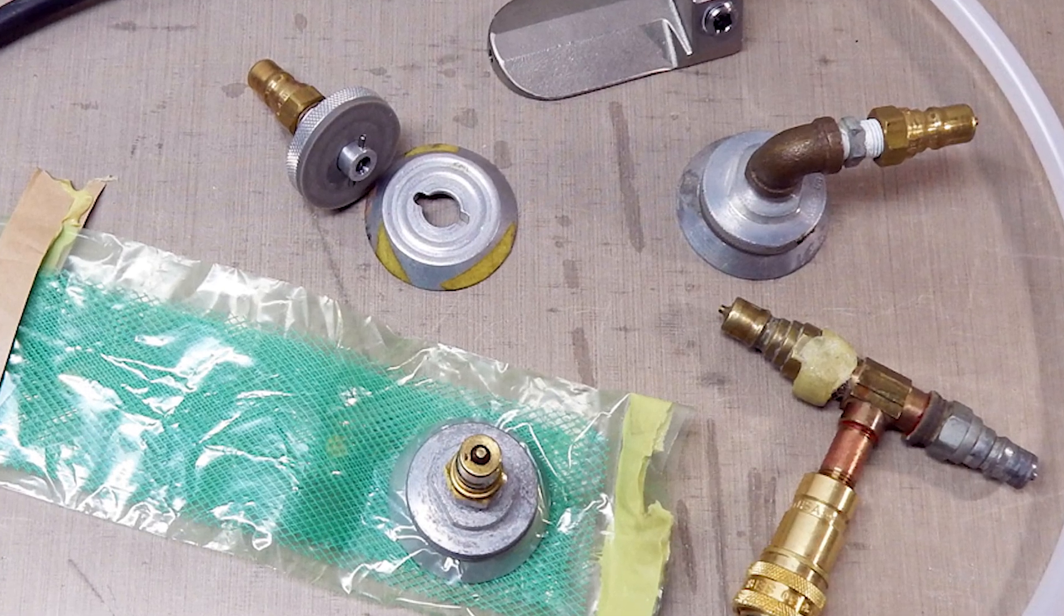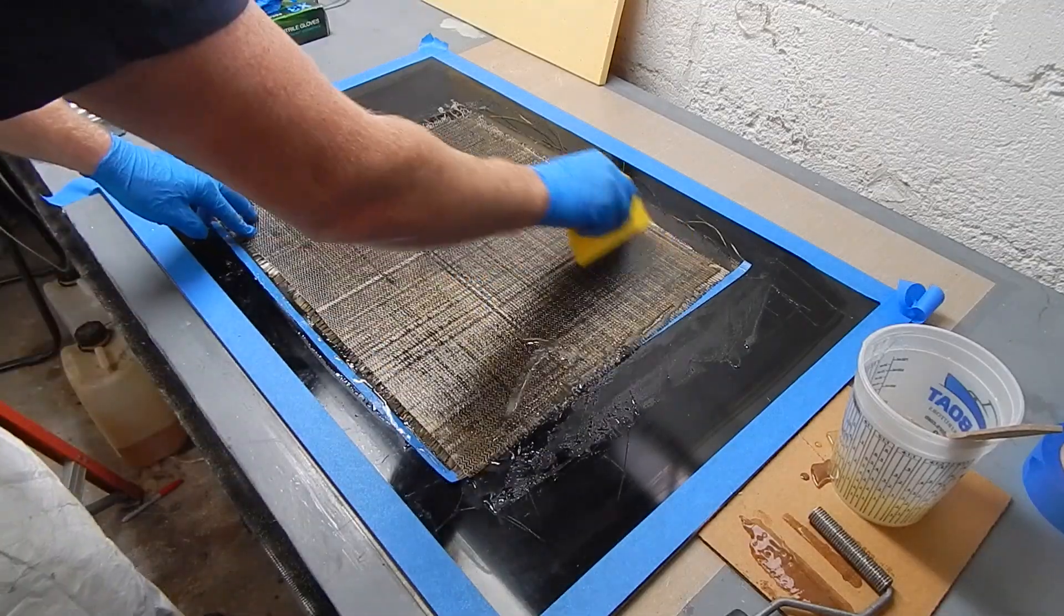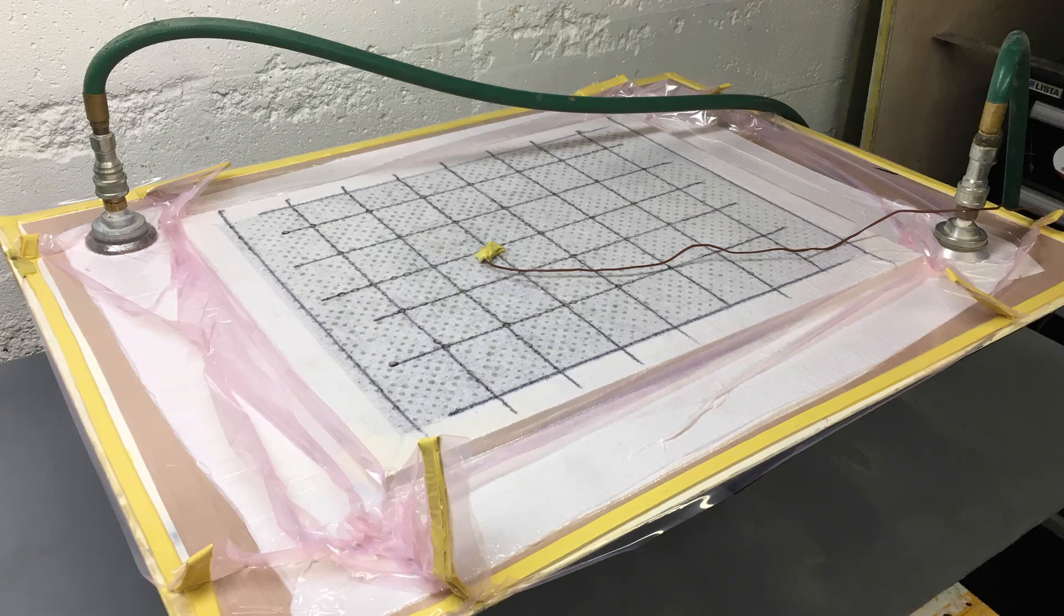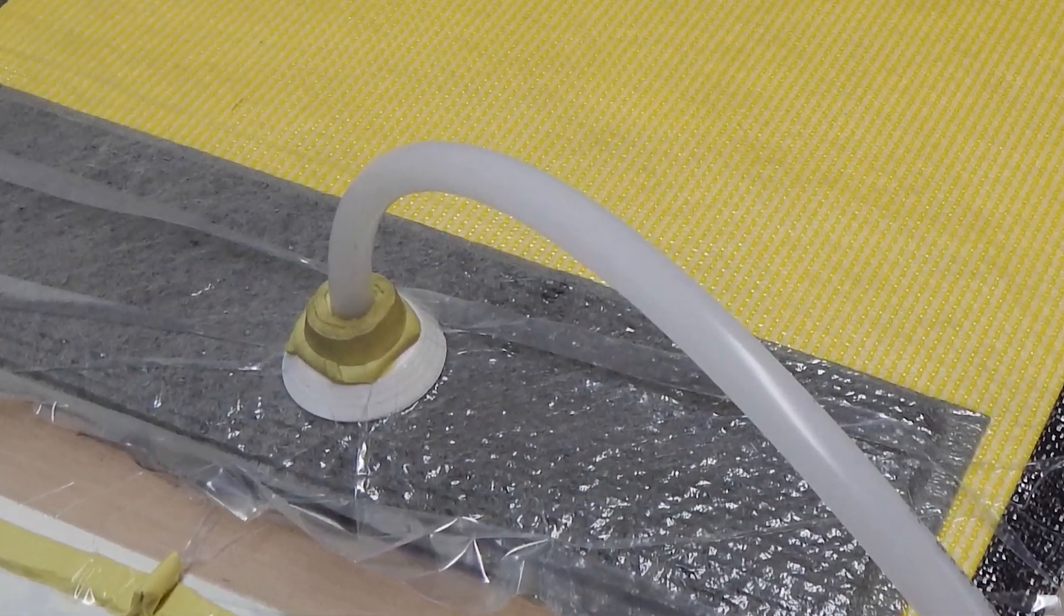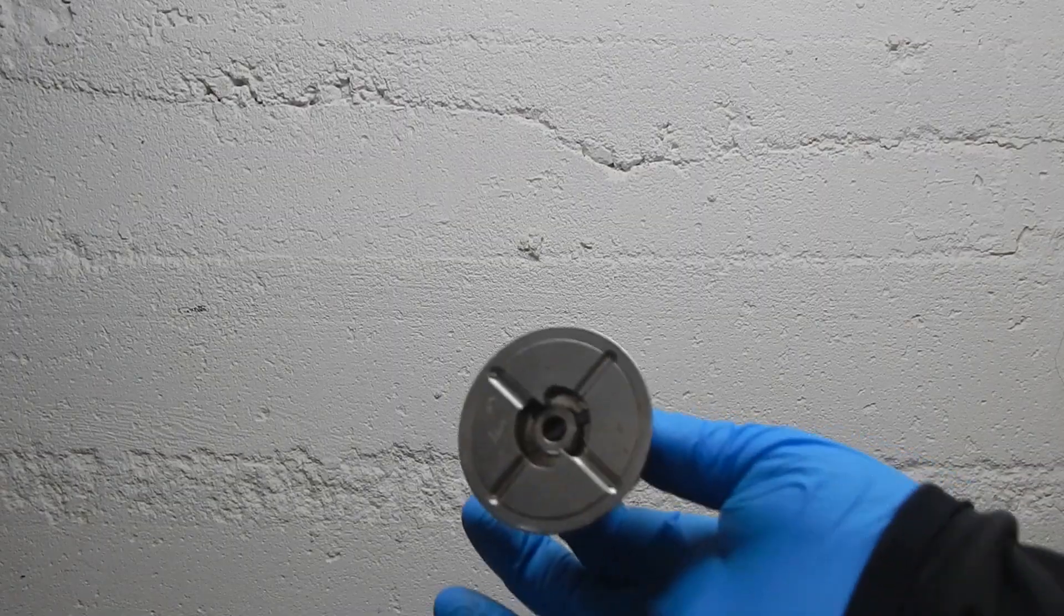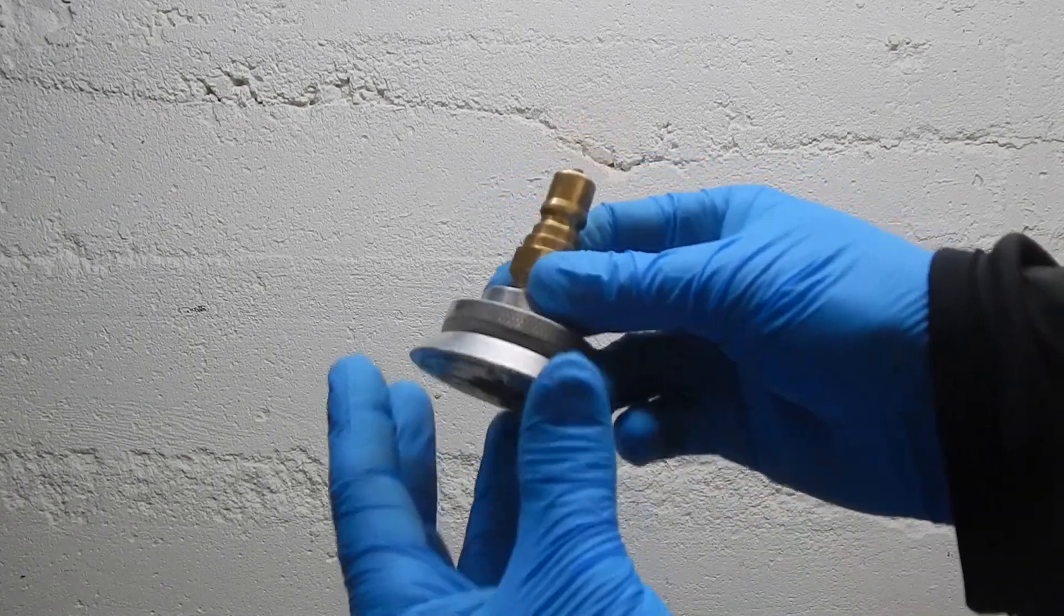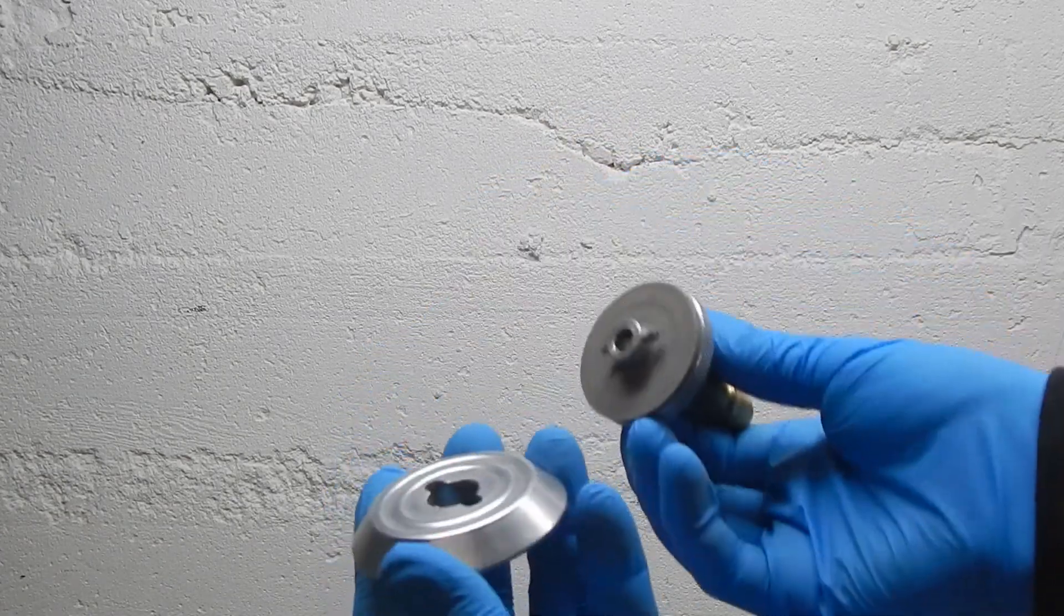So, you're also going to need a way to get that vacuum through the bag. This here applies to wet layup and prepregs. Don't use these nice through bag fittings for infusion because they'll get messed up. These common through bag connectors are called plates, frogs, sniffers, vac connects, pucks, and probably many more things depending on who you hang out with.